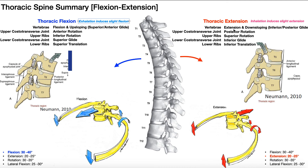Now for thoracic extension — everything's going to do the opposite. Extension would be like certain yoga movements where you're bending your spine backwards, or standing back up from touching your toes. The osteokinematic movement is all the vertebrae extending. The arthrokinematic movement is downsloping, which involves inferior or posterior glide of the superior vertebra relative to the vertebra below. If T5 downslopes during extension, T5 is going to glide posteriorly or inferiorly relative to T6, T6 relative to T7 — and this occurs throughout the T-spine in extension.